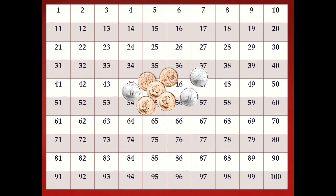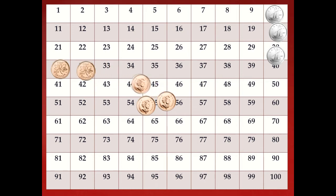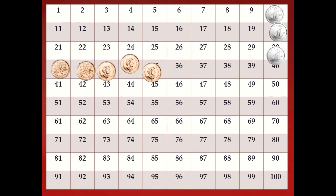Now I have a group of money here. Let's count those together. When we're counting dimes, don't forget, we're going to count by ten. When we're counting pennies, we're going to be counting by one. Would you count with me, please? Ten, twenty, thirty, thirty-one, thirty-two, thirty-three, thirty-four, and thirty-five. This is thirty-five cents.